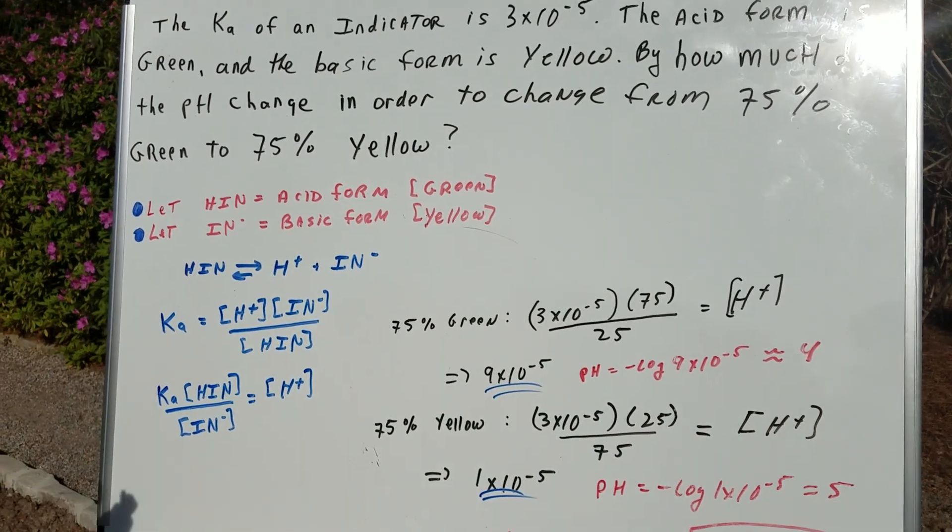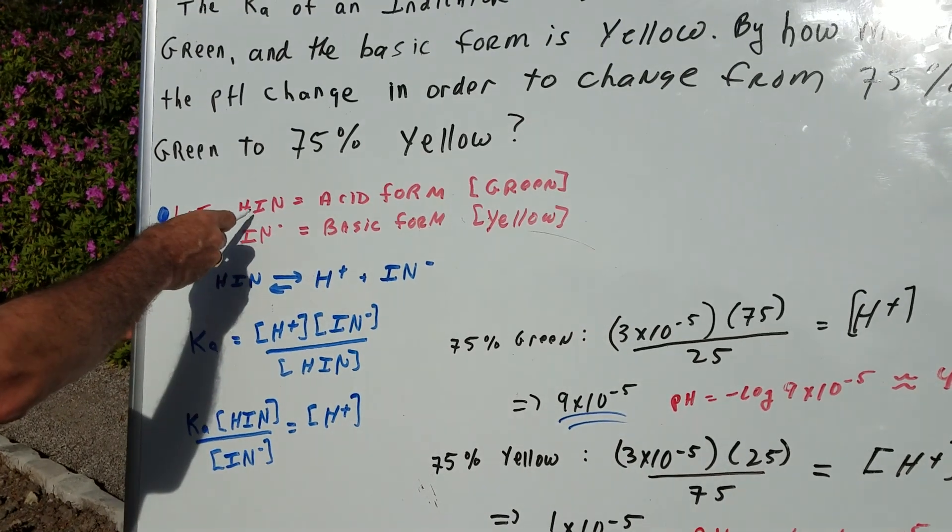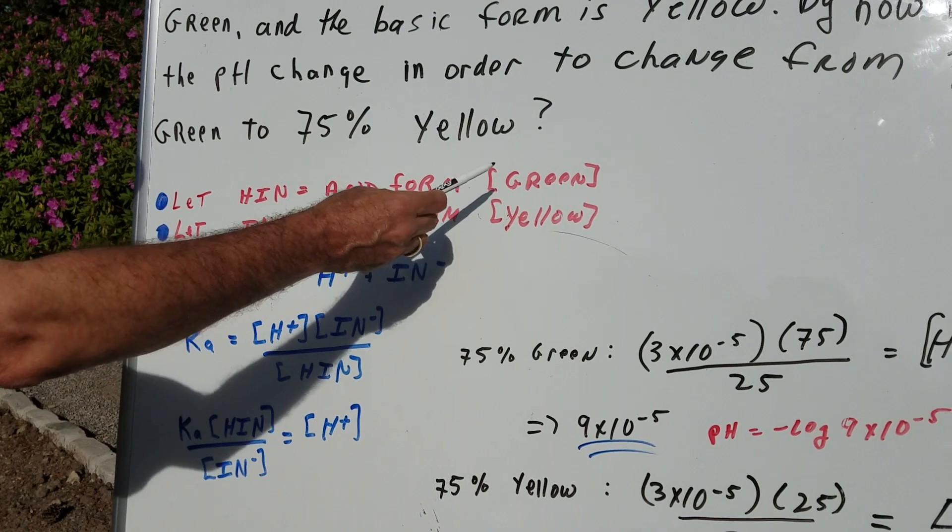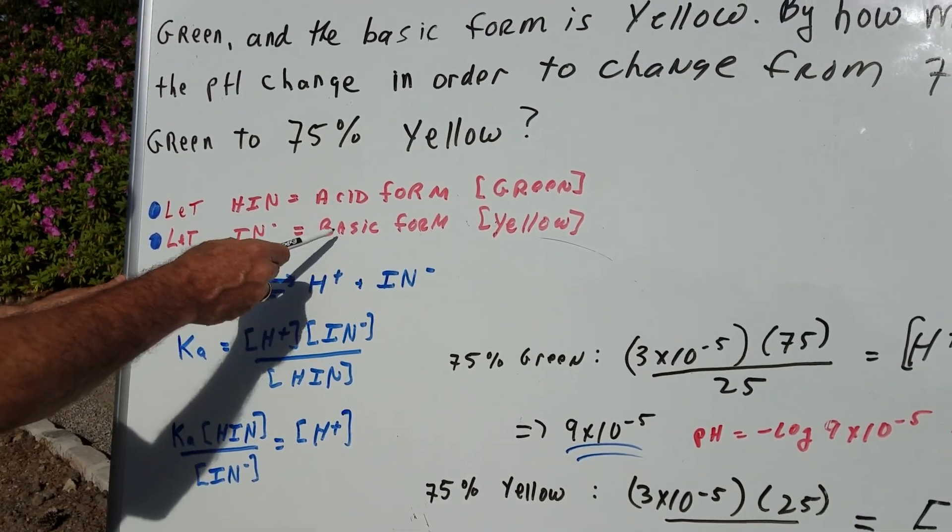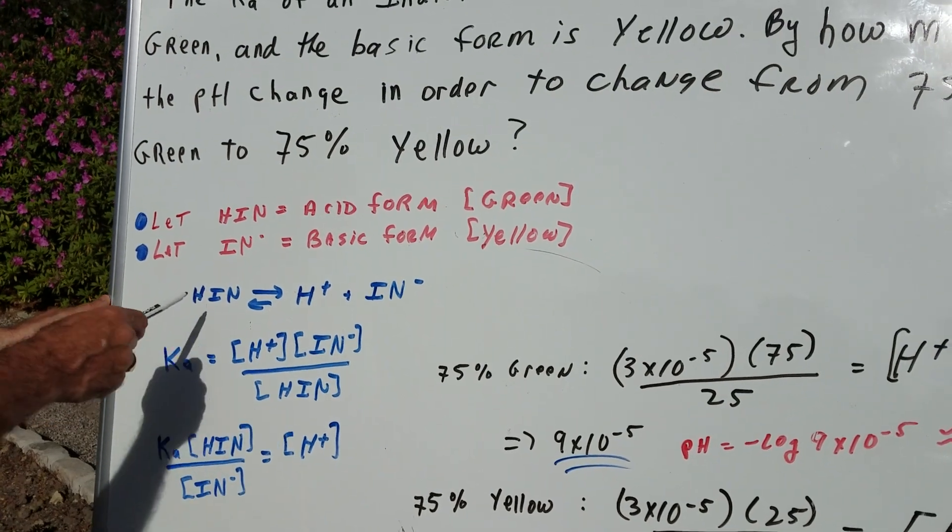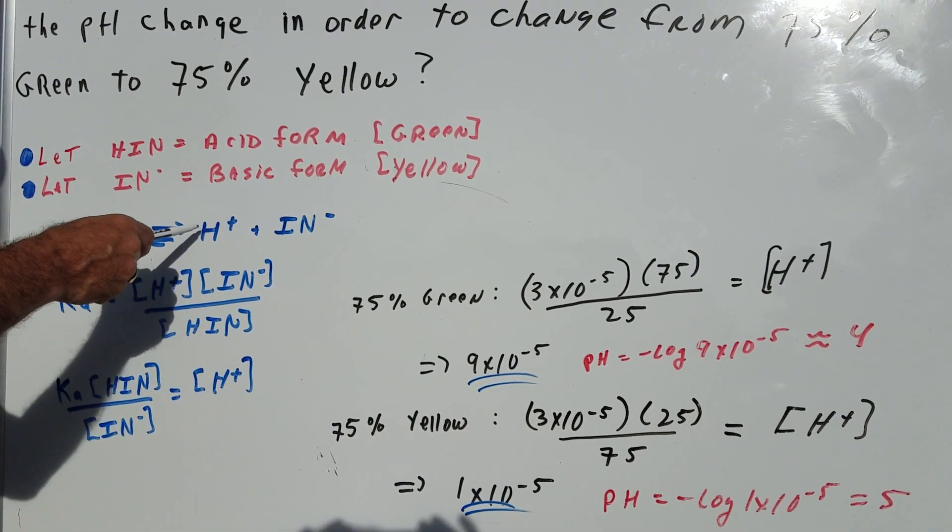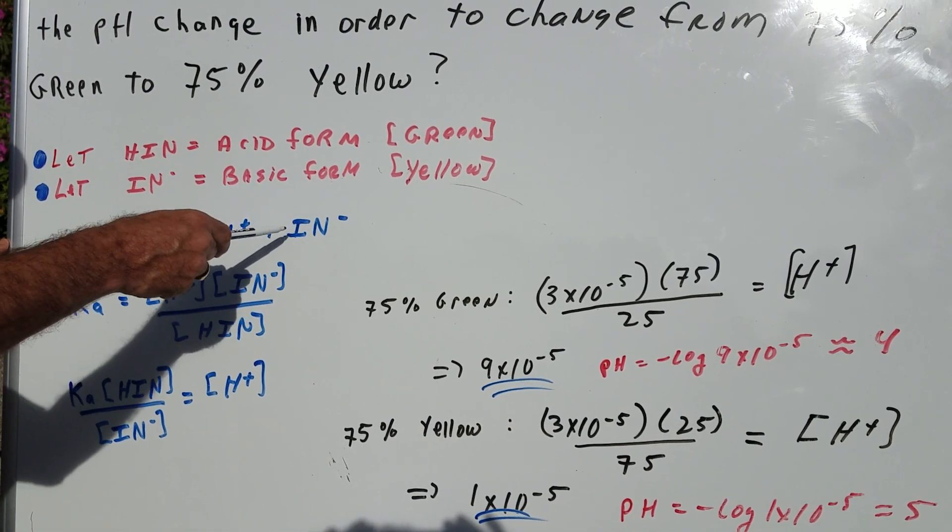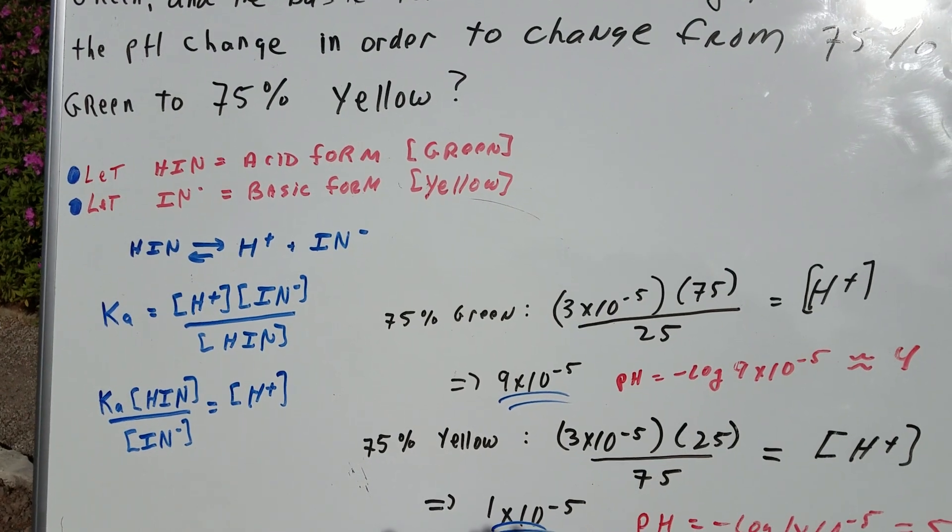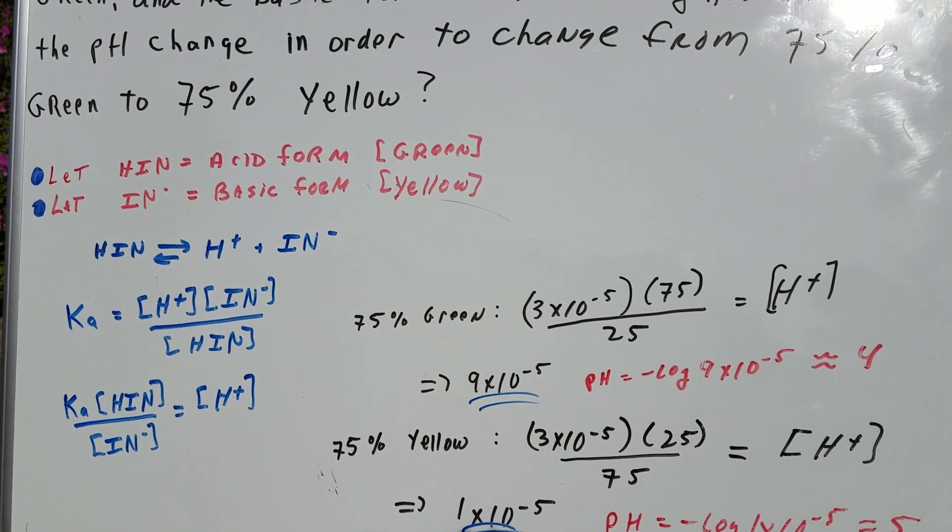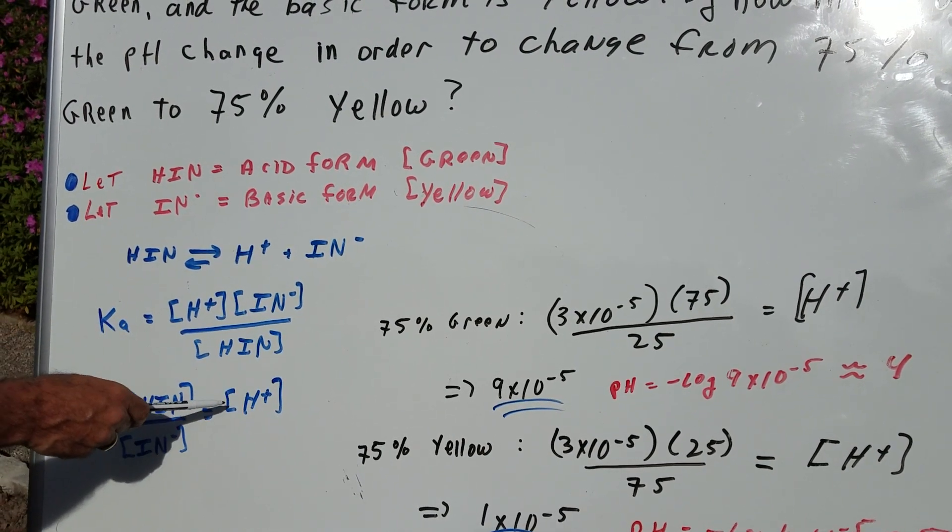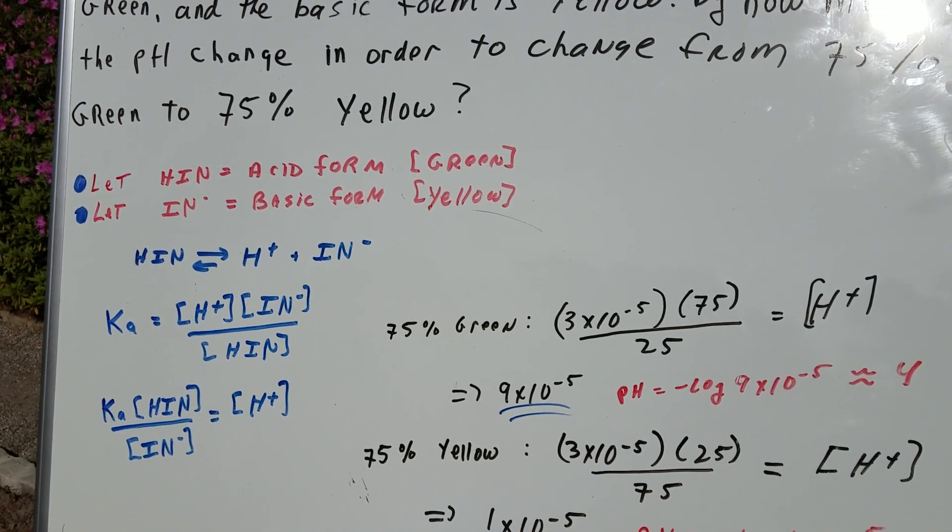The best way to do this is just to set yourself up. I'm going to let HIN stand for the acidic form of the indicator, and that's going to be green. IN⁻ will be the basic form, and that's going to be yellow. So I'm going to write the reaction of HIN ionizing to H⁺ and IN⁻, and then I simply write the Ka expression, which is the products over the reactants: H⁺ times IN⁻ over HIN. Rearranging the equation, I solve for the H⁺ concentration.